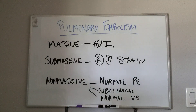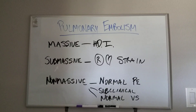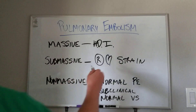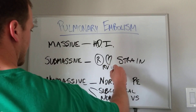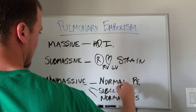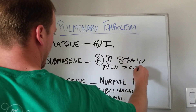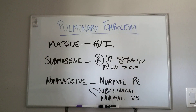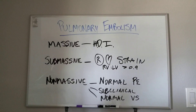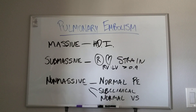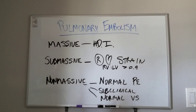Right heart strain can manifest a couple different ways. You can see it on an echocardiogram — you look at the right ventricle to left ventricle ratio. If that's greater than 0.9, or if you see equalization of chamber size, or flattening of the ventricular septum on ultrasound, that lets you know that the right heart is dilated and it's working too hard — having to squeeze too much blood out because there's a clog in the system downstream.